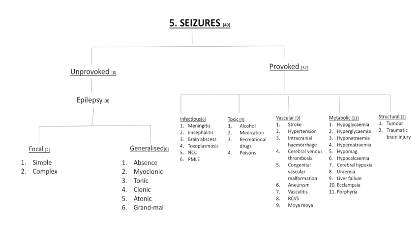Seizures can be focal or generalized. Focal seizures involve a portion of the brain at onset and are limited to one hemisphere. Generalized seizures involve both cerebral hemispheres simultaneously with loss of consciousness. Focal seizures can be simple — that is without impaired awareness — or complex, with impaired awareness. Seizures can also be unprovoked or provoked. Epilepsy is a disorder of the brain characterized by recurrent unprovoked seizures. Long-term remission is achieved with anti-epileptic drugs in most patients with epilepsy.